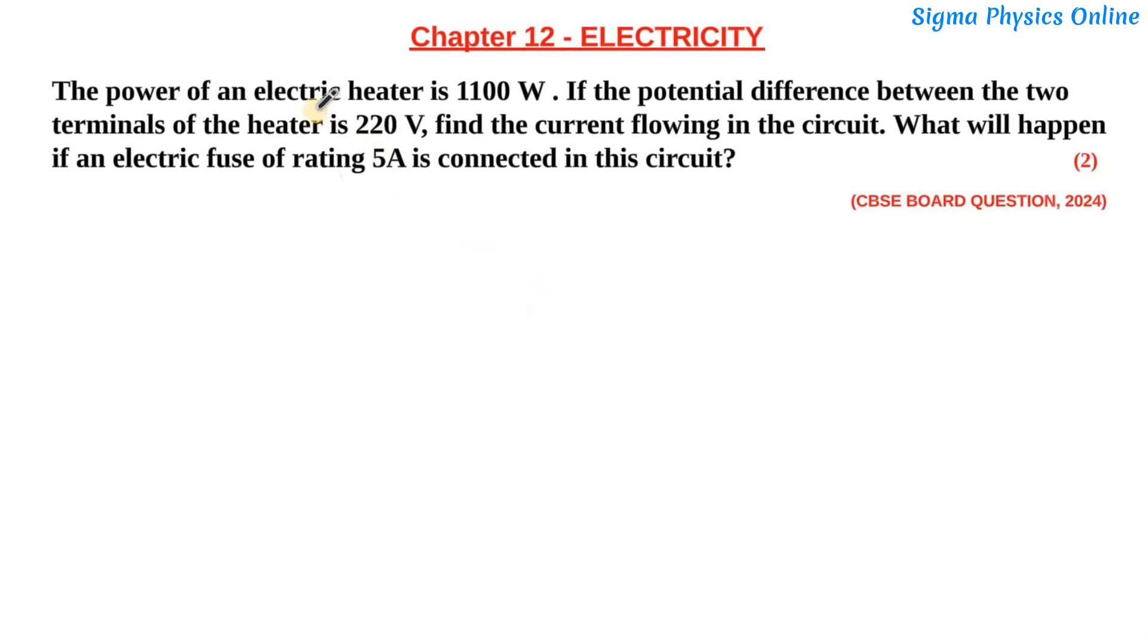All right, so here we have been given an electric heater whose power rating is 1100 watt and the potential difference between the ends of the heater is 220 volt. We have to find out the current flowing in this circuit. So let's write down what all are given. The power of this heater is 1100 watt.